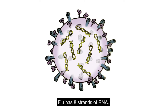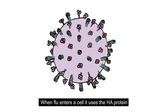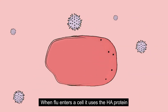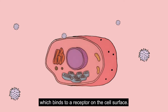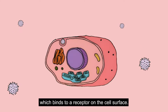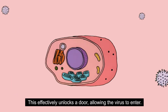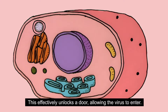Flu has eight strands of RNA. When flu enters a cell, it uses the HA protein which binds to a receptor on the cell surface. This effectively unlocks a door, allowing the virus to enter.